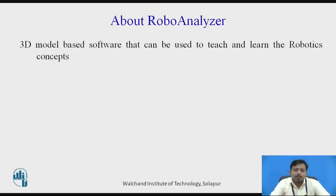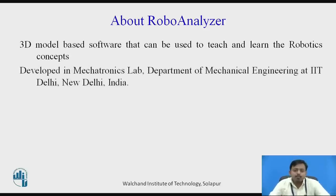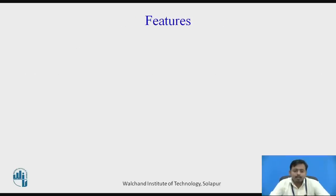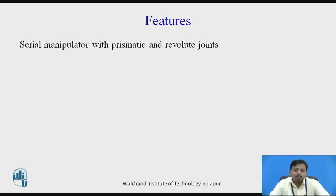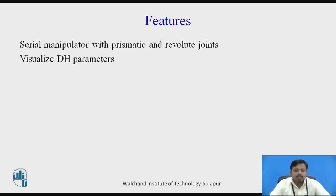RoboAnalyzer is a 3D model-based software that can be used to teach and learn the concepts of robotics, and it is a software that can best visualize robots and their paths. This software was developed in the mechatronics lab in the department of mechanical engineering at IIT Delhi. With the help of this software, we can generate various serial manipulators with different prismatic joints and revolute joints. We can also visualize what DH parameters are and what changes happen in the configuration of robots with the change in DH parameters.